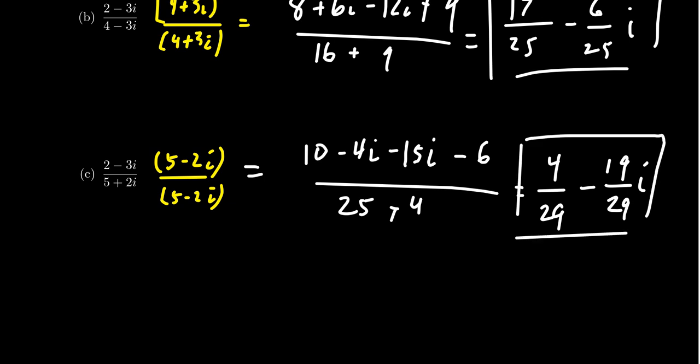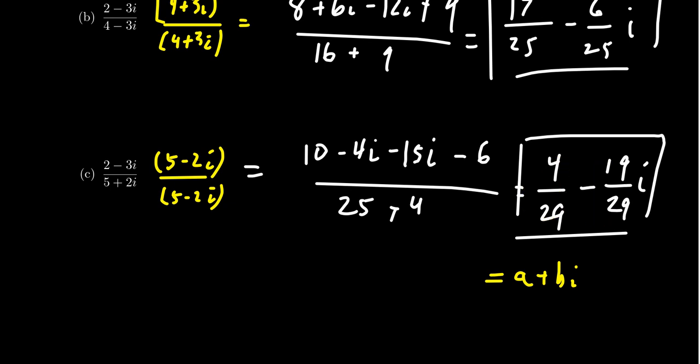It's always our goal to write complex numbers as a real part plus an imaginary part — every complex number can be written as a plus bi. When we do division, we spread the denominator across the real part and the imaginary part, just as we've been doing in these examples.